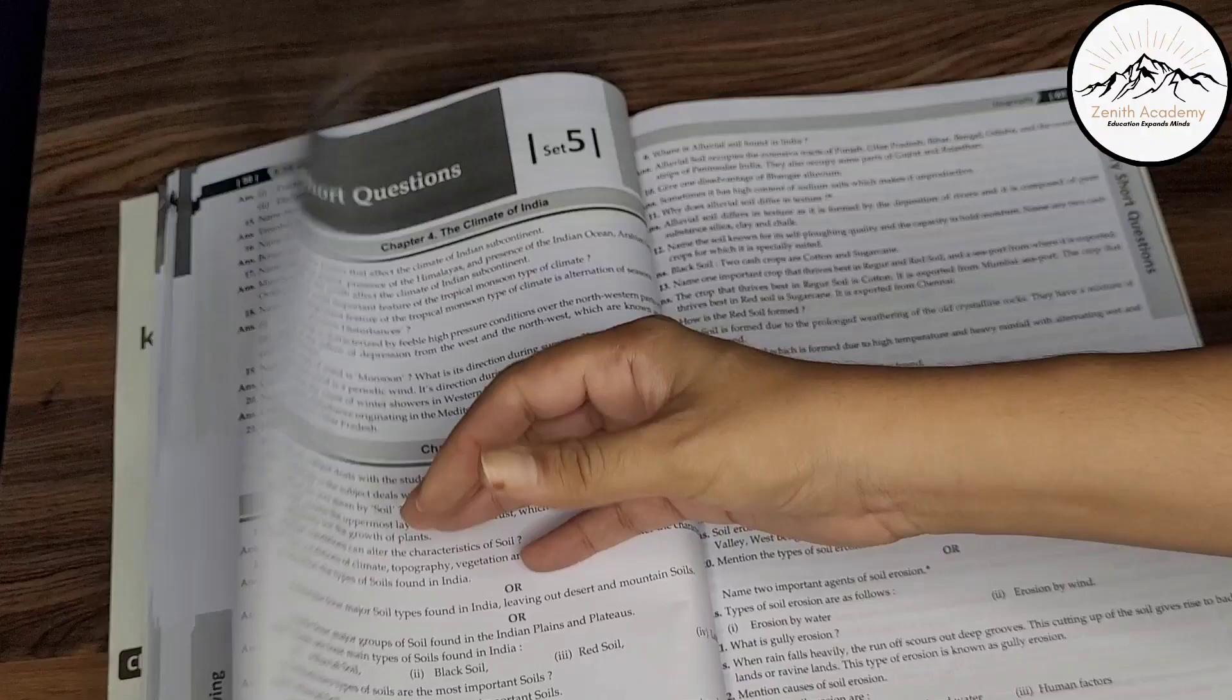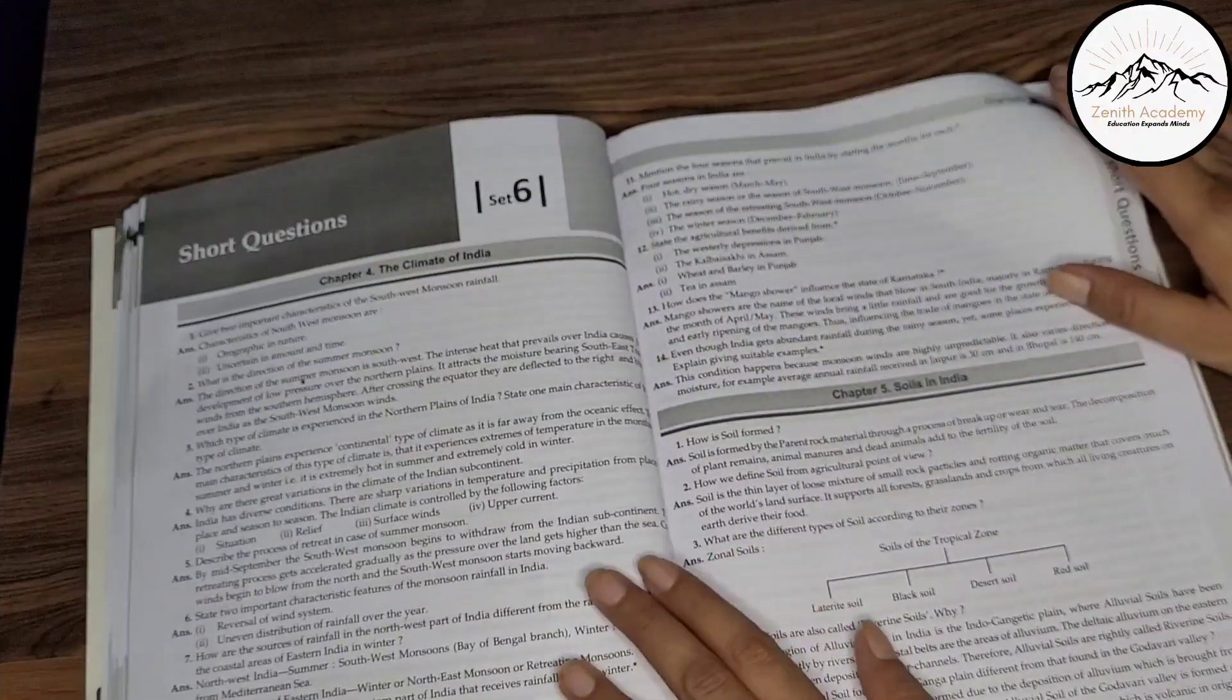Now, you have been given, name the following. So it starts from chapter 4, climate of India, then soils in India. So many questions are there. Natural vegetation of India, water sources, water resources, minerals in India. All the chapters, name the following have been covered. So this is name the following. Then you have very short questions. So starting from chapter 4, all the questions are there. Very short questions.